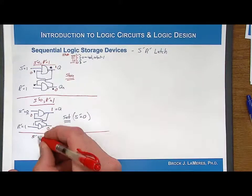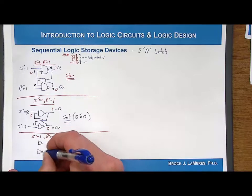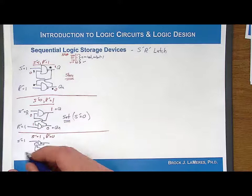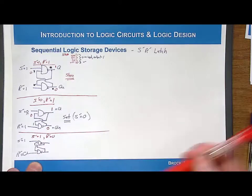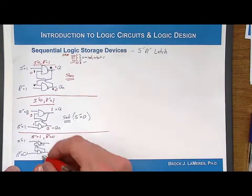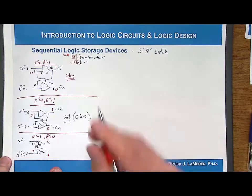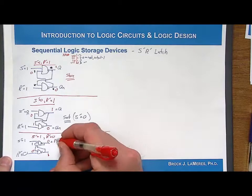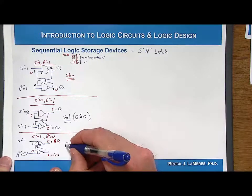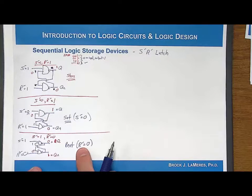Now S̄=1 and R̄=0. Again, a 0 on a NAND gate input forces the output to 1. That 1 feeds back; 1 and 1 into a NAND gate gives 0. The 0 feeds back — doesn't matter, since a 0 input always yields a 1. The circuit settles into the reset state: Q goes to 0, QN goes to 1. Reset is asserted when R̄=0, meaning the reset line being 0 triggers the reset.